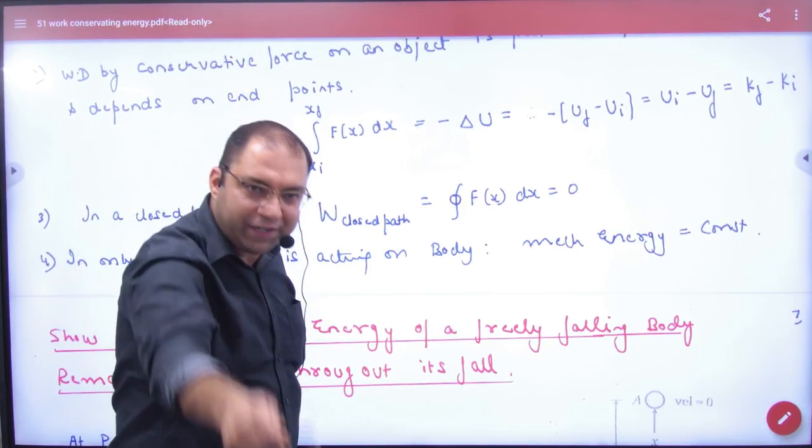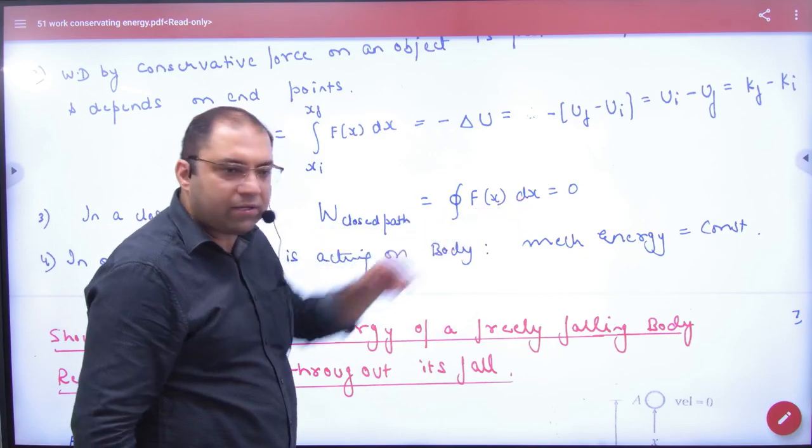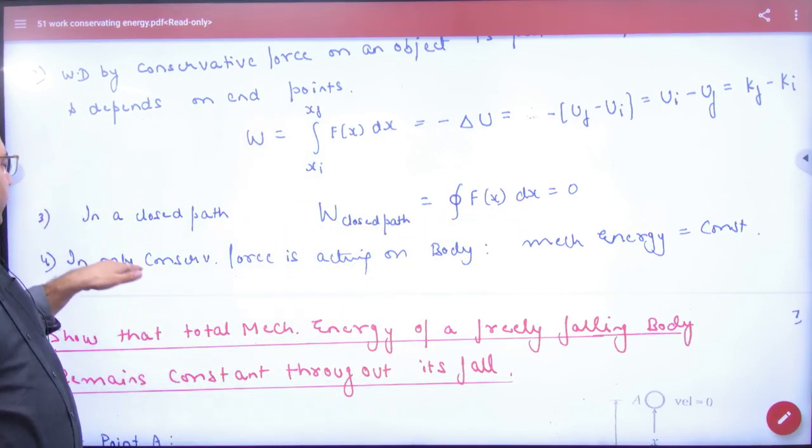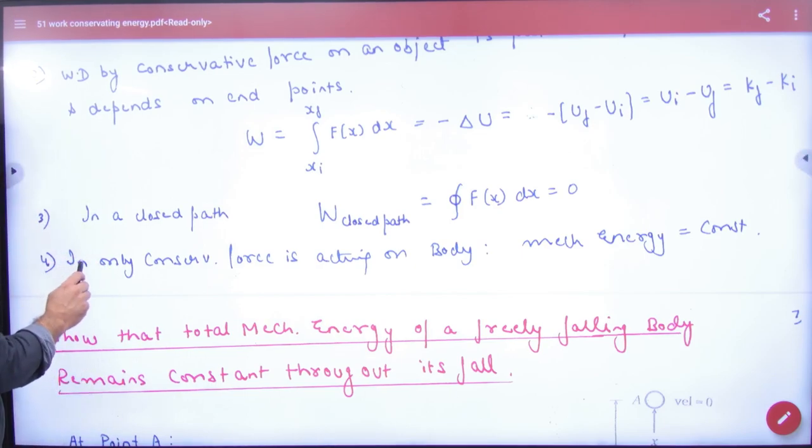Closed path - it's a symbol - so what will be zero. And last property: if only conservative force...